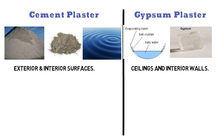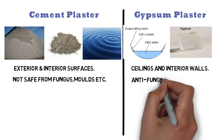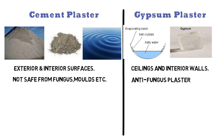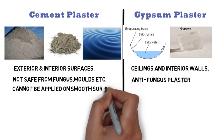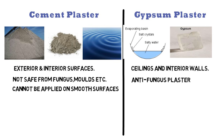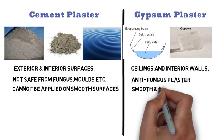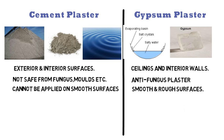Cement plaster is not considered safe from fungus, molds, etc. Gypsum plaster is an anti-fungus plaster and it does not get affected by any insects. Cement plaster cannot be applied on smooth surfaces, whereas gypsum plaster can be applied on smooth as well as rough surfaces.